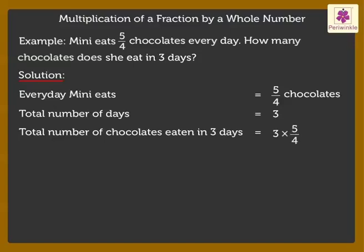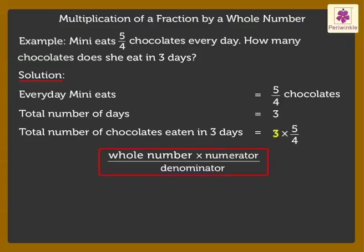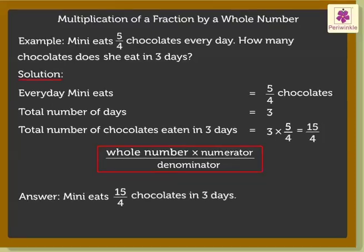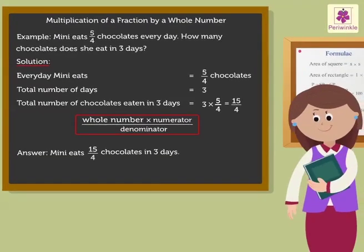So, to find the answer, we use the formula: whole number into numerator upon denominator. Therefore, 3 × 5/4 = 15/4. Thus, Minnie eats 15/4 chocolates in 3 days. Wasn't it easy solving multiplication of a fraction by a whole number?